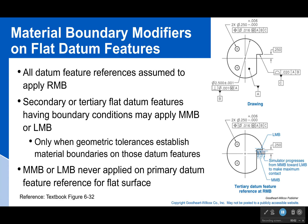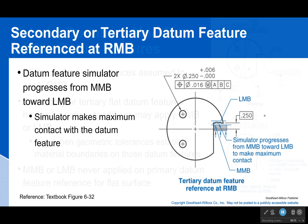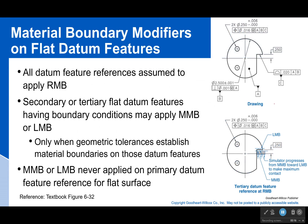Now that we've talked about that order of precedence, let's talk about what happens when we use material boundary modifiers on a flat datum feature. If there's nothing — if I don't show a material boundary modifier, which would go in this little box right next to all these surfaces — then it's always assumed to be at regardless of material boundary.